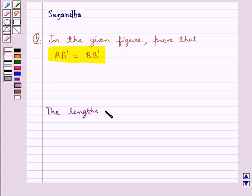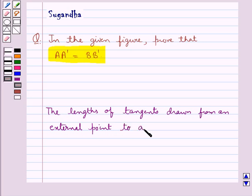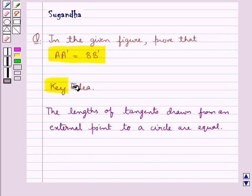First we shall recall one fact which says that the lengths of tangents drawn from an external point to a circle are equal. This is the key idea that we use in this question.